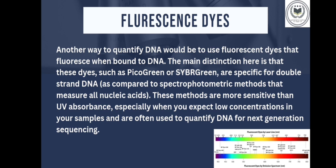Another way to quantify DNA would be the use of fluorescent dyes that fluoresce when bound to DNA. The main distinction here is that these dyes, such as PicoGreen or SYBR Green, are specific for double-stranded DNA, as compared to spectrophotometric methods that measure all nucleic acids.